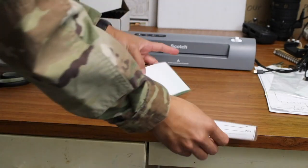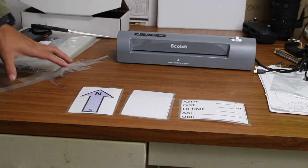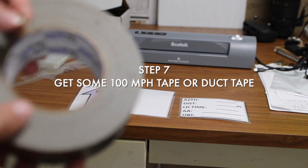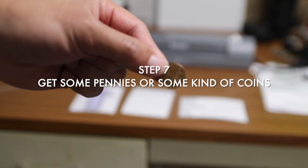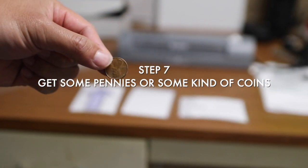Step seven, get some hundred mile an hour tape or some duct tape, and get some pennies or some kind of coins. What I did was I went to the dollar store and gave them a dollar for a hundred pennies in return.